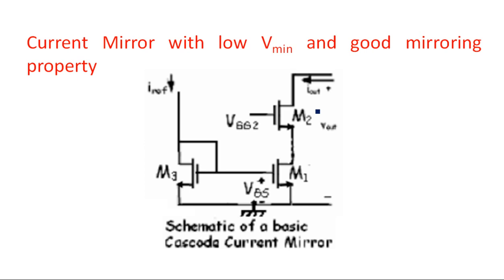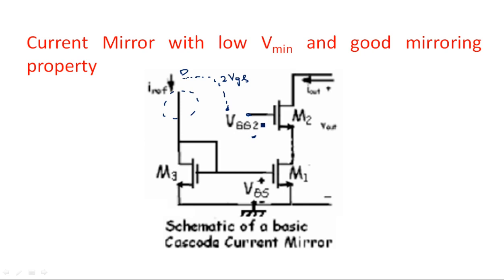This circuit represents the schematic structure of the cascode current mirror. The voltage VGG2 was obtained as 2VGS in the previous configuration, where one more transistor was added and its drain connected to the gate of M2. The voltage at point A was taken as 2Vgs. Now VGG2 is obtained as 2VGS, and hence the minimum voltage Vmin equals 2VGS minus VTH.